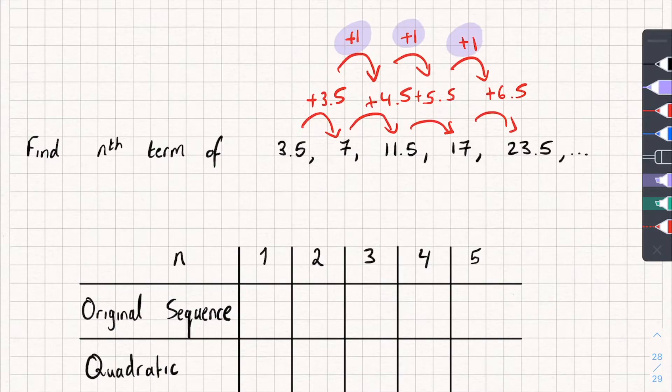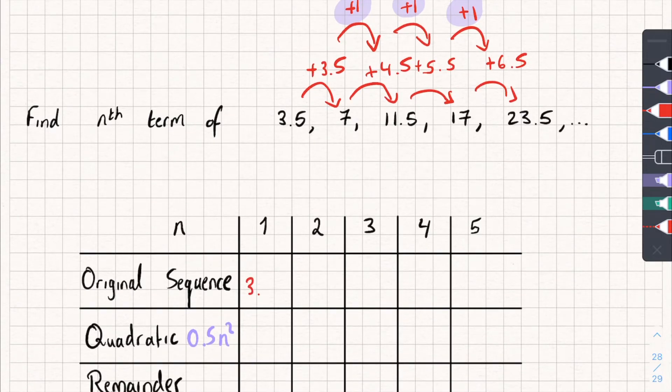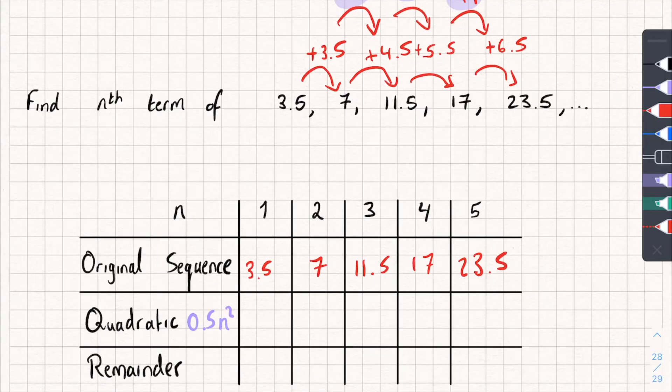And we divide it by 2, and that gives us the coefficient of our n squared. So, in this case, we'll get 0.5 n squared. Now, I'm going to write in the original sequence. So, 3.5, 7, 11.5, 17, 23.5. Then, we're going to substitute n equals 1, 2, 3, 4, and 5 into the quadratic. So, 0.5 n squared. And with the first one, that's going to be, n squared when n is 1 is 1, multiplied by 0.5. That's just going to give us 0.5.